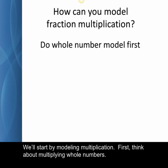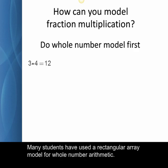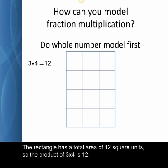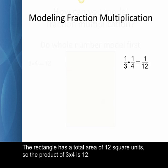We'll start by modeling multiplication. First, think about multiplying whole numbers. Many students have used a rectangular array model for whole number arithmetic. The product of three times four is modeled by a rectangle three units wide by four units long. The rectangle has a total area of twelve square units, so the product of three times four is twelve.